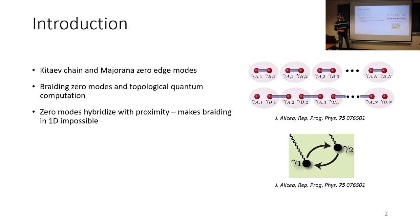Unfortunately, these zero modes, they hybridize with proximity, which makes braiding in one dimension impossible. It would be really nice if we had an extra degree of freedom to sort of play around with that we could use to facilitate a braiding protocol.